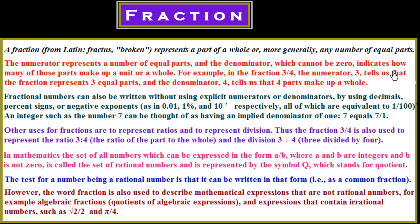For example, in the fraction 3 over 4, the numerator 3 tells us that the fraction represents 3 equal parts, and the denominator 4 tells us that 4 parts make up a whole. Fraction numbers can also be written without using explicit numerators or denominators.